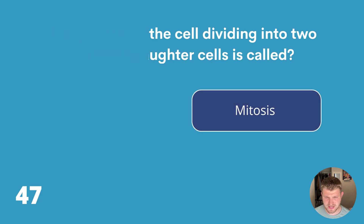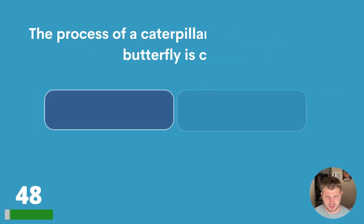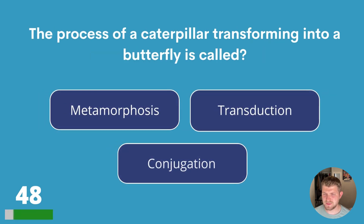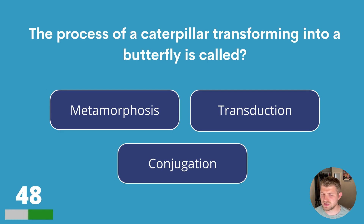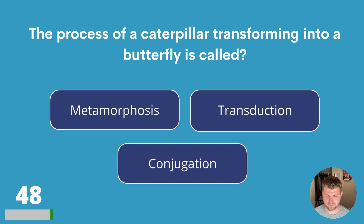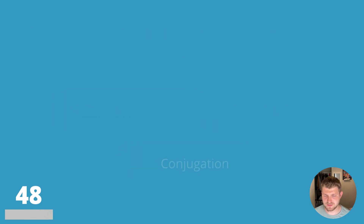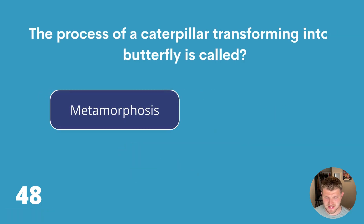Question forty-eight. The process of a caterpillar transforming into a butterfly is called metamorphosis, transduction or conjugation? The answer is metamorphosis.